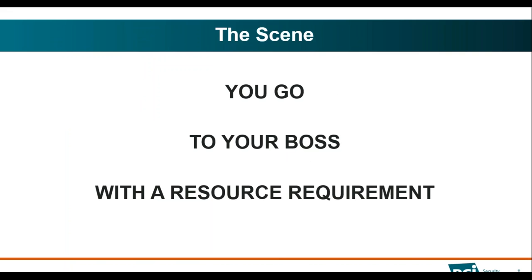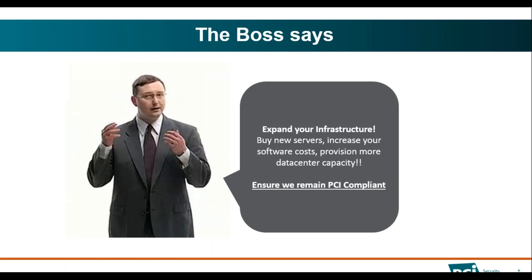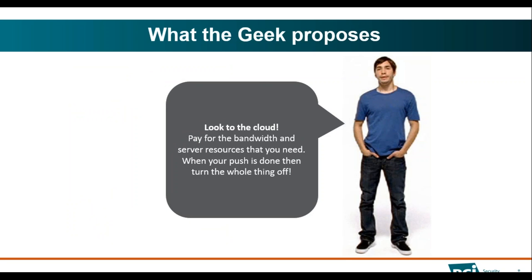So what is the typical scene? You go to your boss with a resource requirement — you need to put in some hard drives, some servers and stuff. Your boss says go ahead, buy your new servers, increase your software, buy whatever you want — but ensure that we remain PCI compliant. That's a tall order because technology changes. And the key response? Look to the cloud. It's the easy way out — don't get into a do-it-yourself approach unless you have very deep pockets.